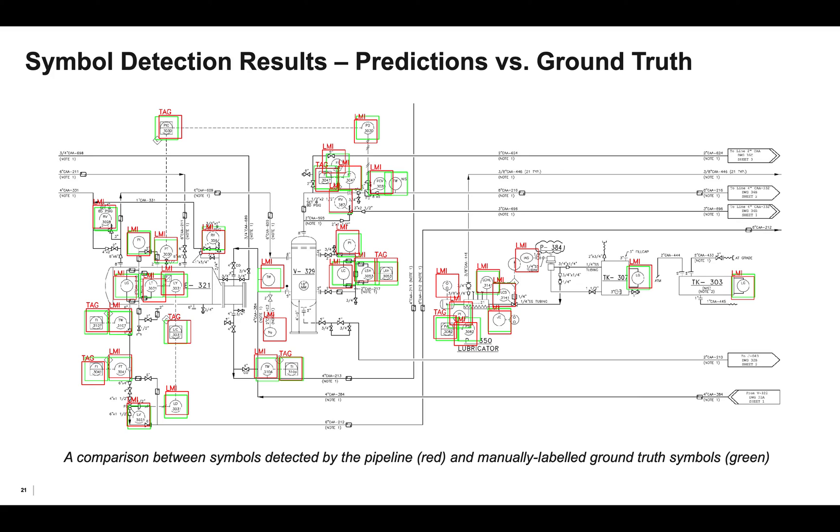Here is a comparison between the symbols detected by the pipeline, shown in red, and the ground truth symbols, which were manually labeled, shown in green. We see that there is a nice overlap between the predicted and ground truth symbols, and the model is doing a good job. There are a few errors, so a few false positives here, here, and here - LMIs are not ovals, they're circles - and a few false negatives here as well, so this LMI was apparently not detected by the model.